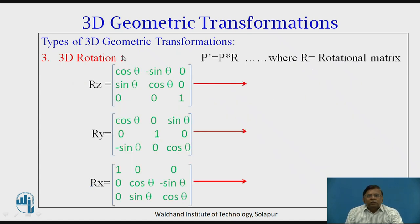Coming to the mathematical representation, as we know, P dash the new coordinate is equal to P old coordinate into R. R is a rotational matrix. Here Rz, Ry and Rx, these three are the matrices to be used for rotation about z, y and x axis respectively.